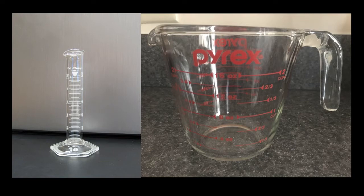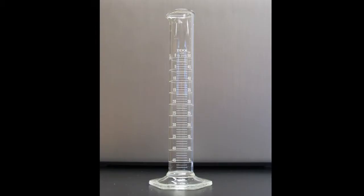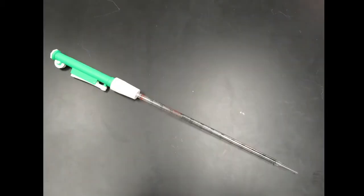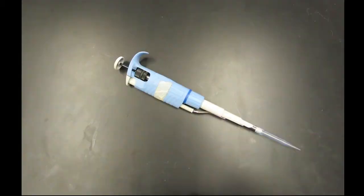A graduated cylinder is like a measuring cup that is optimized for use in a lab. Graduated cylinders are best for measuring volumes between 25 mL and 2000 mL. If you need to measure between 1 and 25 mL, use a pipette. If you need to measure less than 1 mL, use a micropipette.